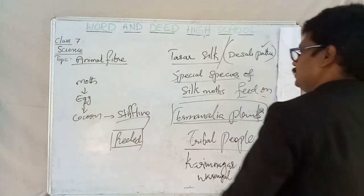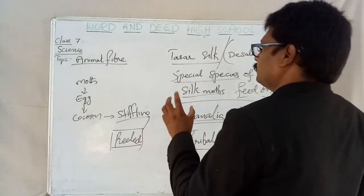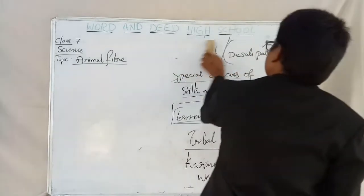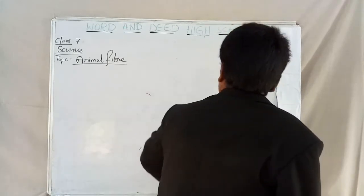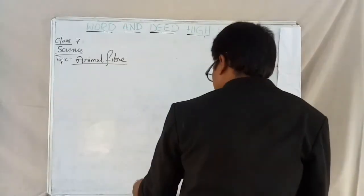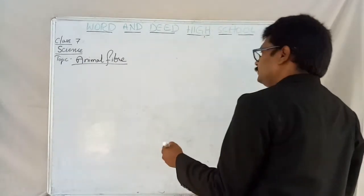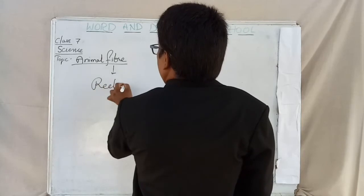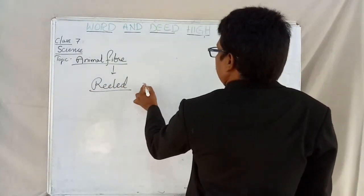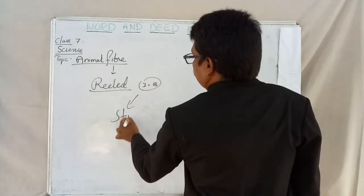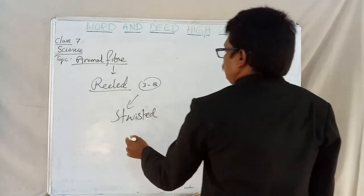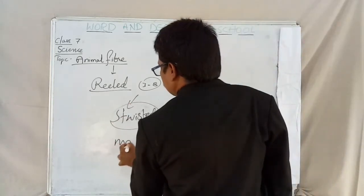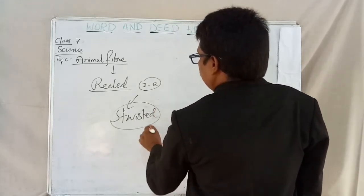This is additional information that you have to understand. After we get the silk and after it is reeled, the next level of the sericulture process — after the fiber is reeled, 3 to 8 fibers are twisted together by machines, twisted by twisters.